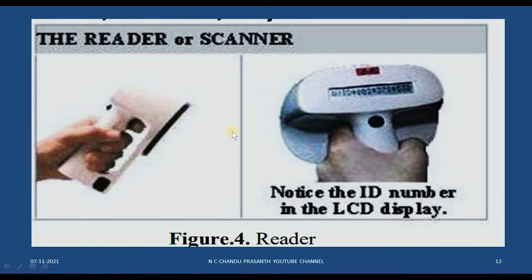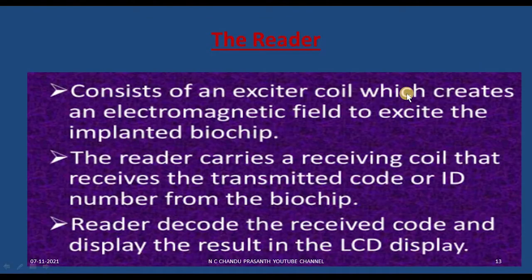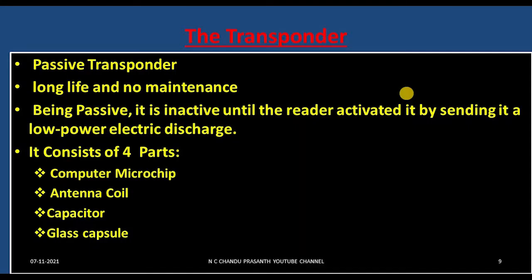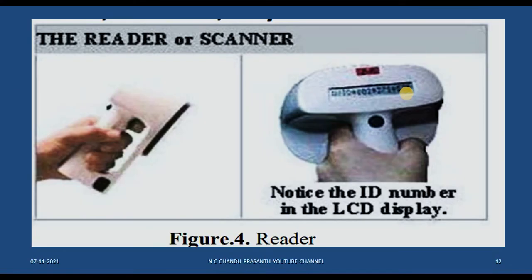The reader, also called an RF scanner, generally contains an LCD screen. It consists of an exciter coil that creates an electromagnetic field to excite the implanted biochip, and a receiving coil that receives the transmitted ID number from the biochip. Simply put, the transponder acts like a transmitter and the reader acts like a receiver.